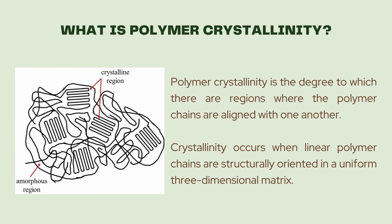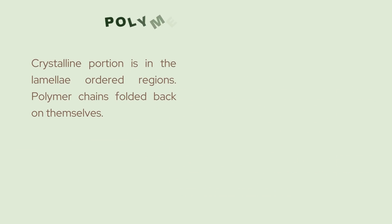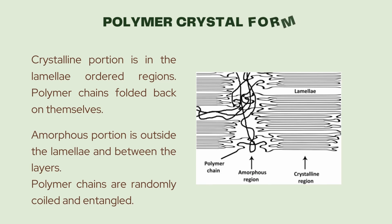Increased crystallinity is associated with an increase in rigidity, tensile strength, and opacity. Crystalline polymer has a crystalline portion and an amorphous portion. The crystalline portion is in the lamellae — ordered regions where polymer chains fold back on themselves. The amorphous portion is outside the lamellae and between the layers, where polymer chains are randomly coiled and entangled.